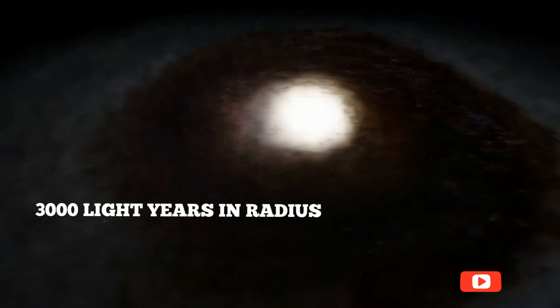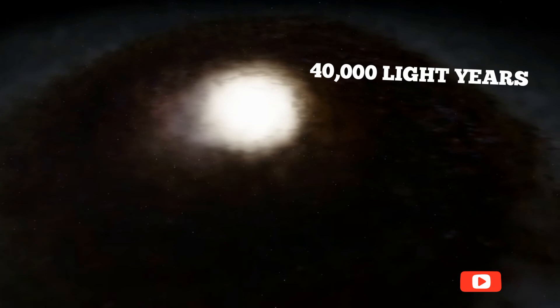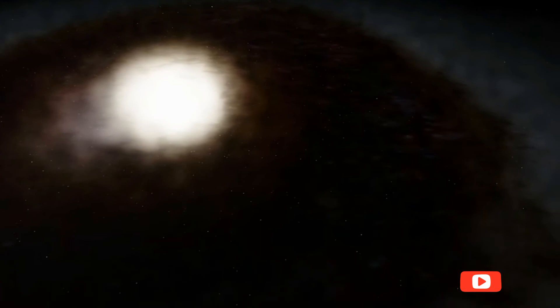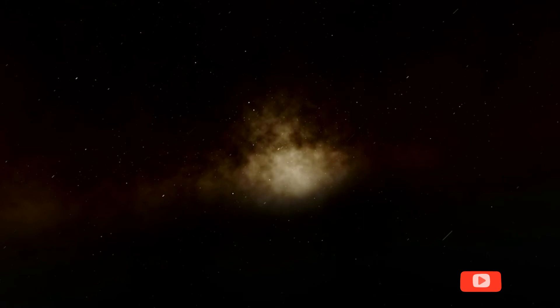The inner disk of M64, roughly 3000 light-years in radius, rubs along the outer disk, which spans about 40,000 light-years and rotates in the opposite direction at about 300 kilometers per second. The rubbing of the two counter-rotating disks results in an intense burst of star-forming activity in the region where the disk gases collide and are compressed.